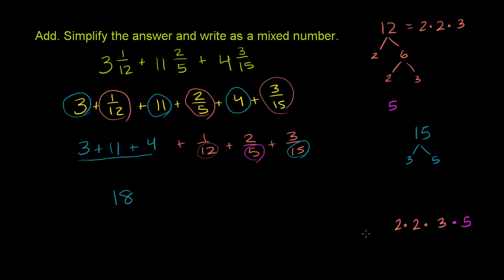And then it also has to have a 3 and a 5. Well, we already have a 3. We already have a 3 from the 12. And we already have a 5 from the 5. So this number will be divisible by all of them. And you can see that. Because you can see it has a 12 in it, it has a 5 in it, and it has a 15 in it. So what is this number?